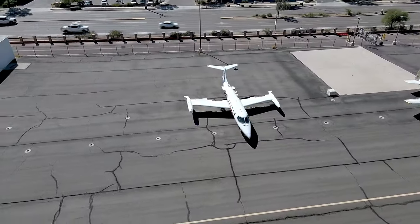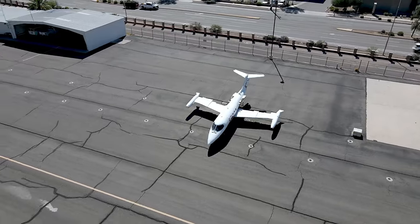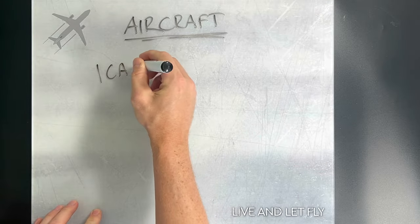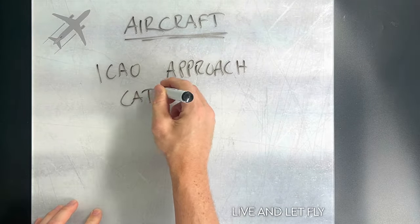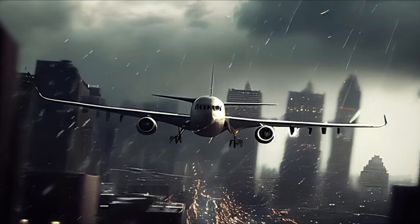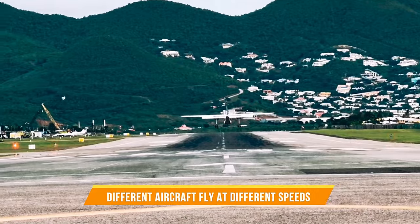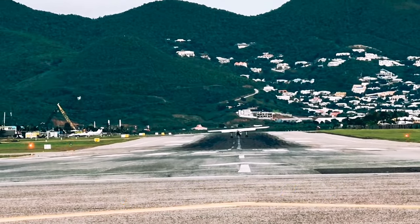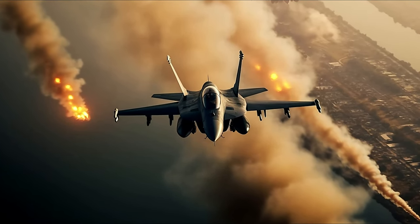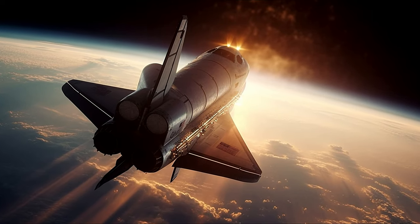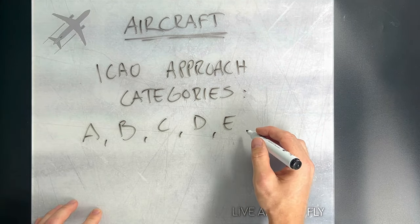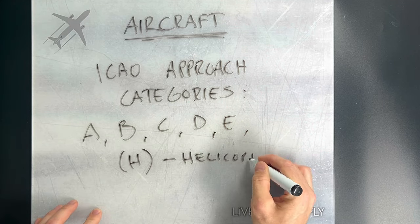If you thought there couldn't possibly be any more ways to categorize aircraft, think again — but we promise this is the last one, and it's actually pretty important. The last list for today is the ICAO approach categories. All major airports have approach procedures so that aircraft can land in low visibility or otherwise bad weather conditions. The challenge is that different aircraft fly at different speeds when approaching the runway. In the ICAO approach categories, all aircraft belong to a group from A to E, based on the speed at which the aircraft will be flying on the final approach before landing.